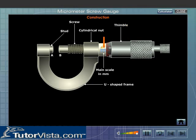A reference line graduated in mm is drawn on the cylinder attached to the nut. This reference line is called the main scale. The hollow cylinder or the thimble is also graduated and is divided into equal parts, generally 50 or 100 parts.